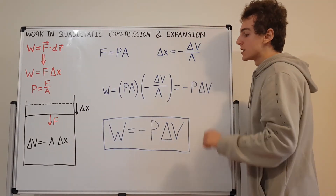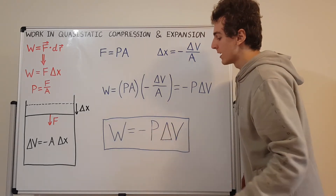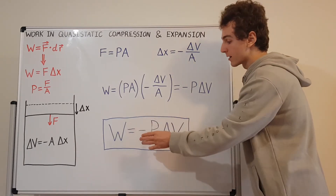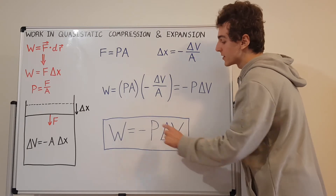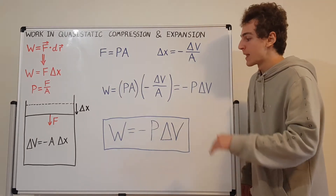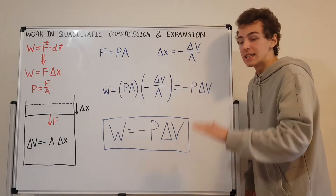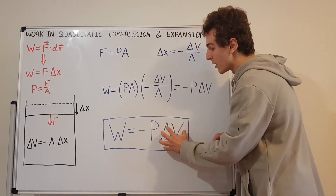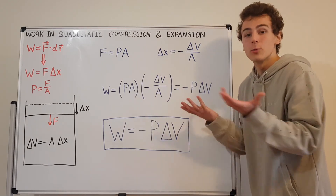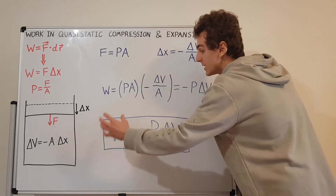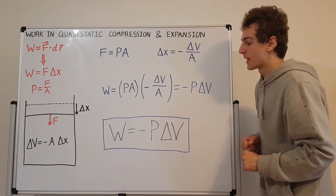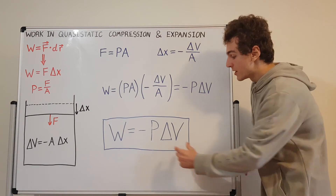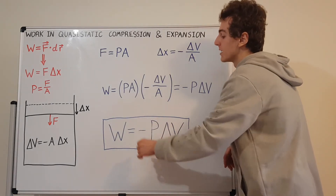Let's look at what this minus sign means. A positive delta v — which corresponds to expansion, since the volume is increasing — gives a negative work, meaning the gas is losing energy because it's doing work on the surroundings and its internal energy is decreasing. A negative delta v corresponds to compression, giving positive work — negative times negative is positive — because when you compress the gas you give it more energy.